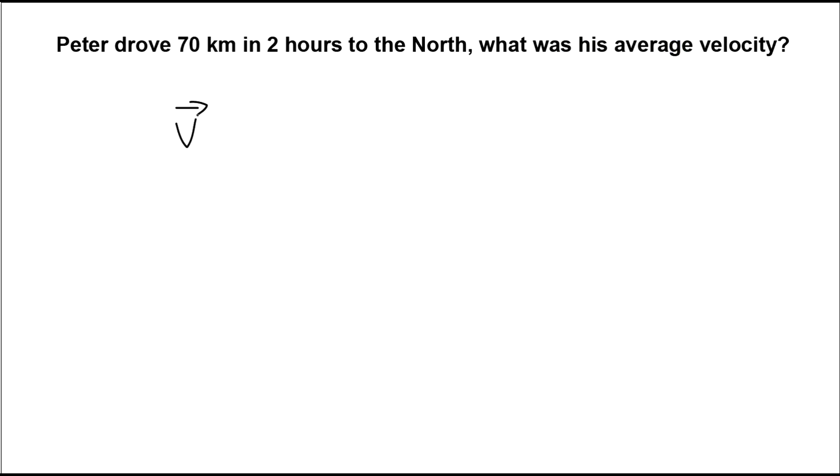Okay, let's write down velocity. Now remember you've got your displacement over time. So let's write the values in here. So you've got 70 kilometers to the north. Don't forget to the north, since that's what makes it a displacement rather than just a distance.